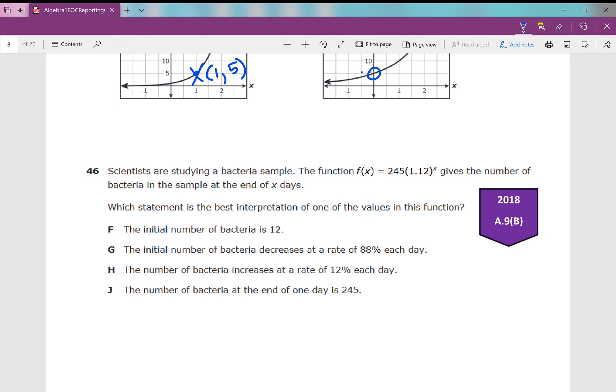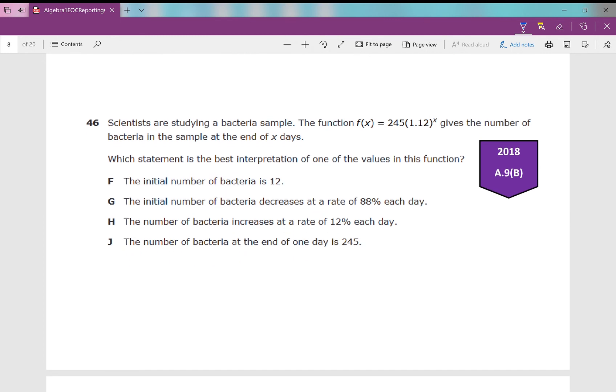All right. I believe this is the last one for 2018. Scientists are studying a bacteria sample. The function f of x equals 245 times 1.12 raised to the power of x gives the number of bacteria in the sample at the end of x days. Which statement is the best interpretation of one of the values in this function? We just need to go through this and see what we're given.